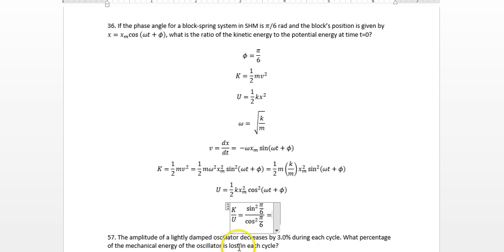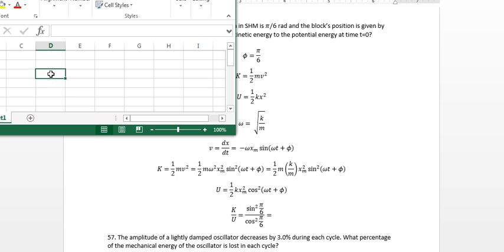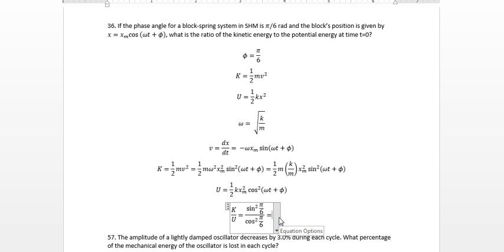So let's just go equals sine of pi over 6 squared. And now we want the ratio, 0.333. And that would be it for problem 36.